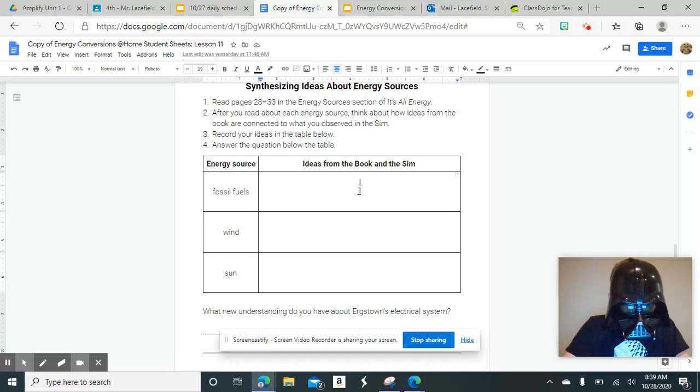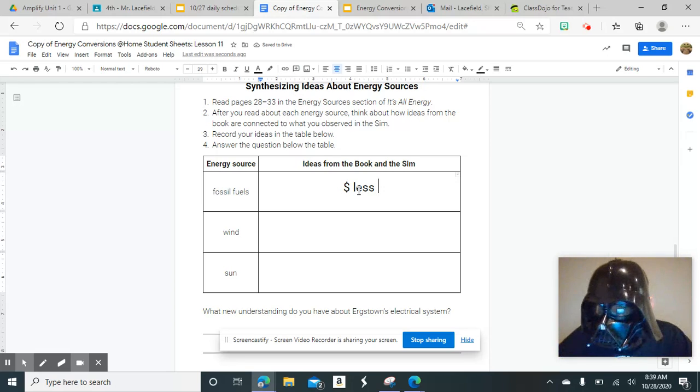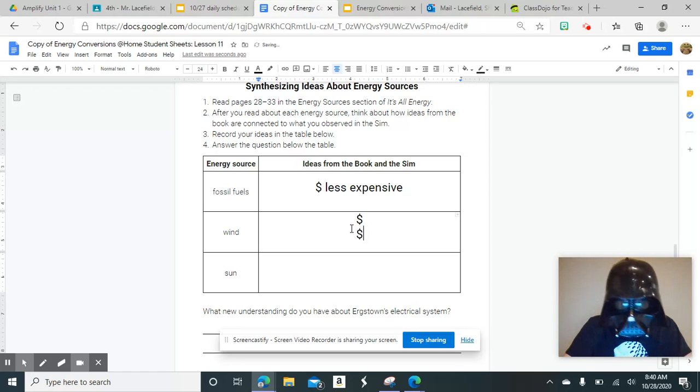When we left off yesterday, we had been putting in the cost of how much these are going to cost in Urgstown to run. We were using our book to find this information out and working in groups to share. Each person in the group was responsible for one of these sections. The first thing that we looked at was how much it was, so how much would it cost to be able to use this specific source of power. For fossil fuels, it was less expensive. For wind, you had a less expensive version and a more expensive version. For sun, you had a more expensive version and a most expensive version. That's what we had put in there when we last left off.